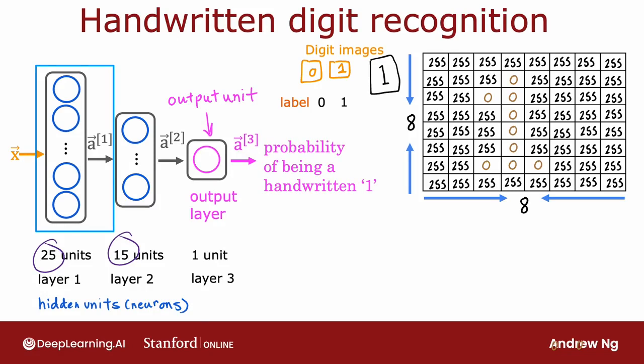So let's step through the sequence of computations that the neural network would need to make to go from the input x, this 8 by 8 or 64 numbers, to the predicted probability a3. The first computation is to go from x to a1. And that's what the first layer or the first hidden layer does. It carries out a computation of a superscript square bracket 1 equals this formula on the right.